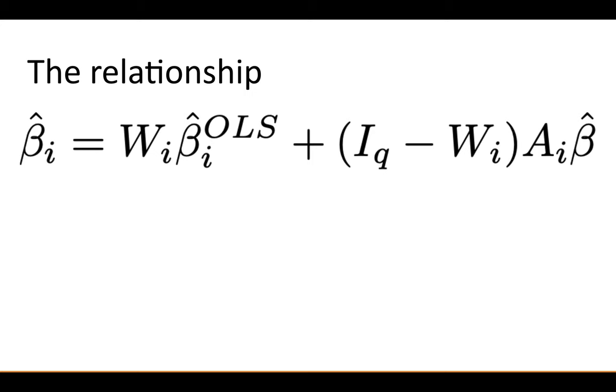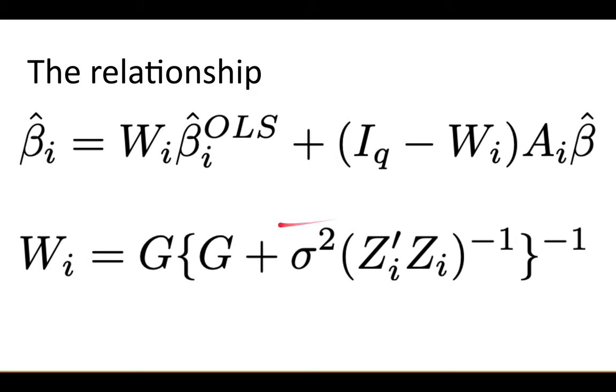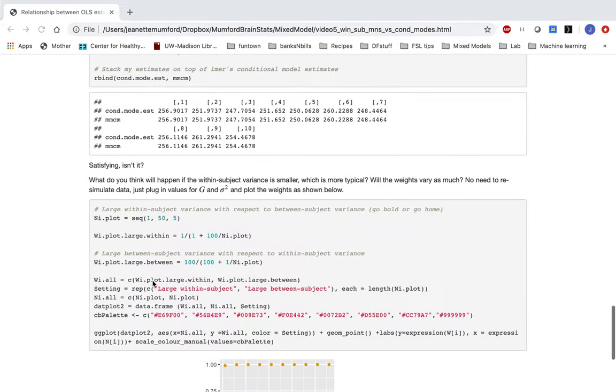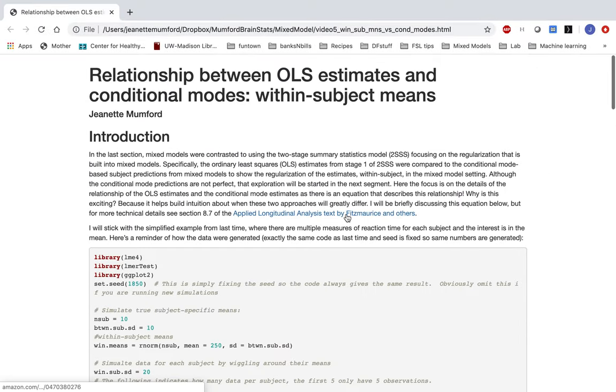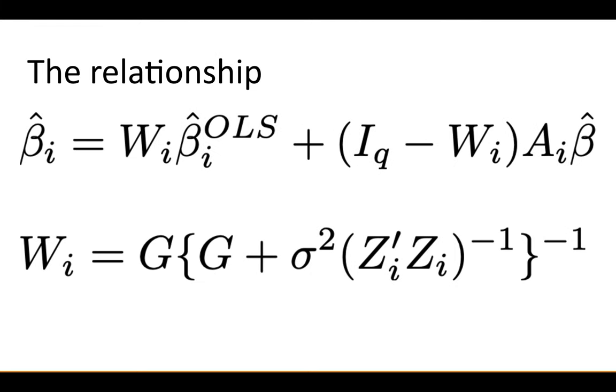So now what we need to wonder is, well, what makes wi big? What makes wi small? Because then we'll know, even without running the estimates, we're going to know if our conditional mode based estimate is a lot like the OLS estimate, or if they're very different. So here's the equation for the weight. I'm giving you the full thing. I believe the reference is in the R markdown file. This applied longitudinal analysis text by Fitzmaurice has it in section 8.7. I can't tell you how thrilled I was when I found this equation because it's really exciting to have this exact relationship between these two things.